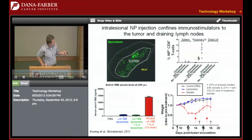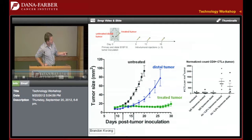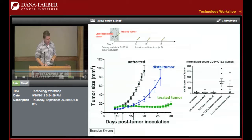Untreated tumors grow out over a period of a couple of weeks. If we treat a local tumor on days 9, 12, and 13 in a two-tumor model — injecting one flank and leaving the other untreated — we see not only complete stopping of growth at the treated tumor, but also significant suppression at the distal site. This is correlated with increased CD8 T cell infiltration at both sites, driven by T cells primed in the draining lymph node and lymphocytes in the tumor being reactivated and disseminating to other sites.